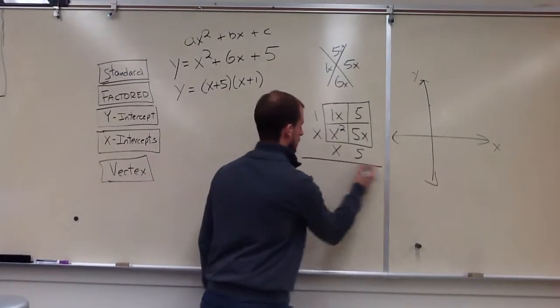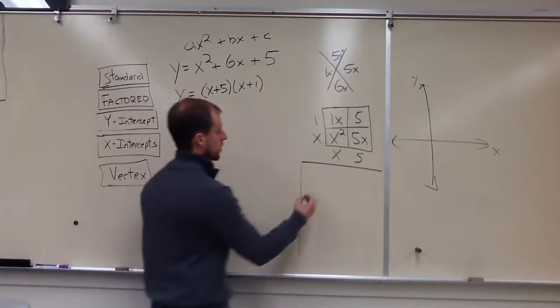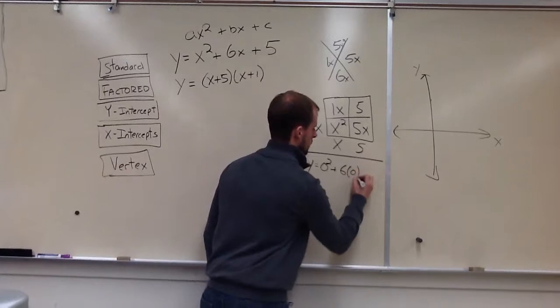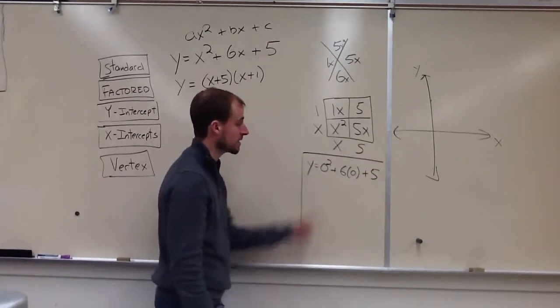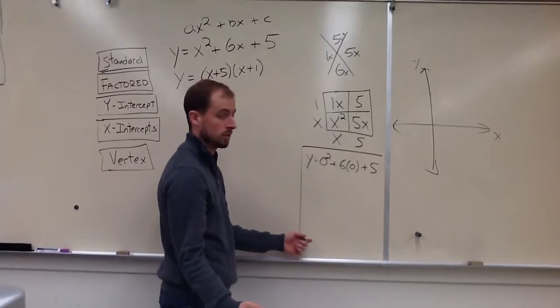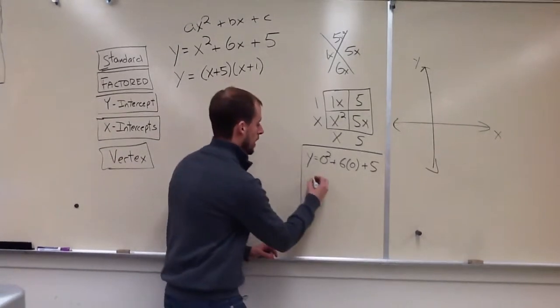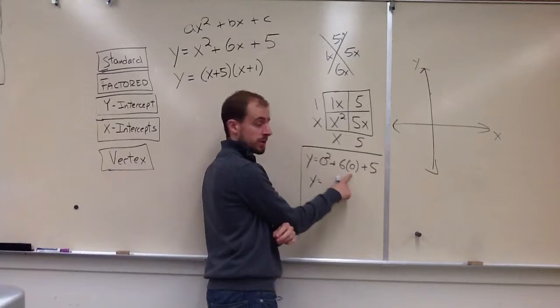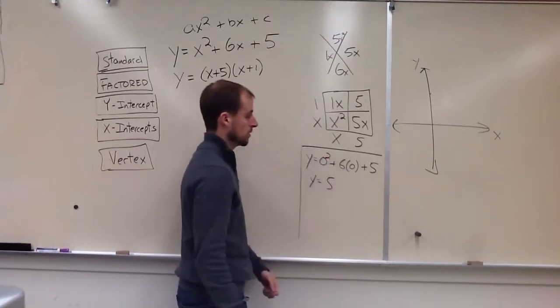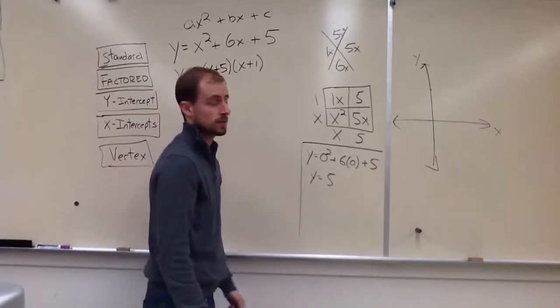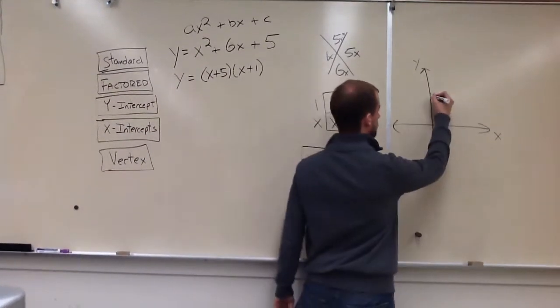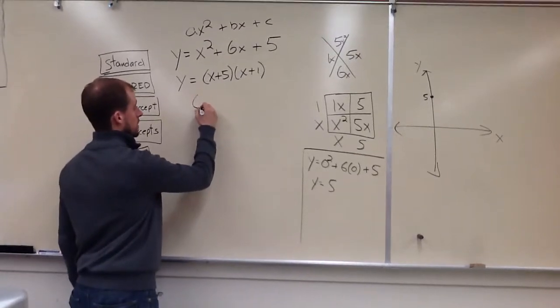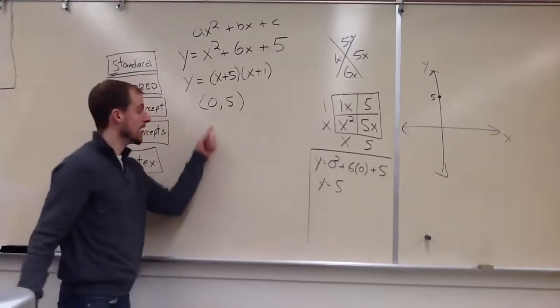On the side note. So, y equals 0 squared. I just simply plugged in 0 for x to find my y-intercept. Right? For the same reason that I just told you. So, y equals 0 squared is 0. So that goes away. 6 times 0 is 0. So that goes away. And I'm just looking at 5. So, this graph crosses the x, or the y-axis, at y equals 5. Which, right here. That's where it crosses. So, if I write it as a point, it's going to be 0, 5. Again, x is 0, y is 5.